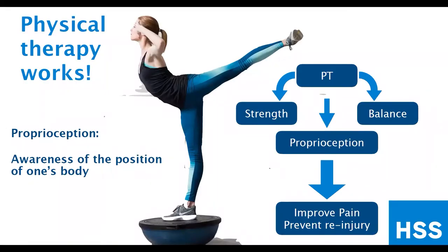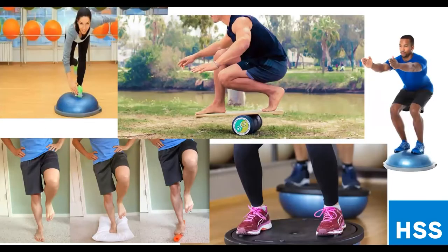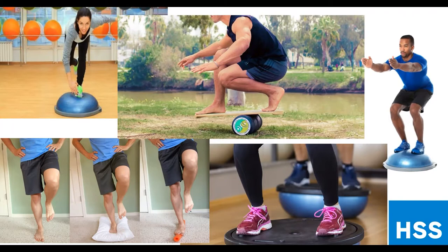Physical therapy works really well for ankle sprains. The basic approach is to increase your strength, balance, and proprioception — which is awareness of the position of one's body, meaning your muscles' ability to sense where they are and help correct imbalances. A lot of the work in PT involves exercises to improve your balance and your muscles' ability to stabilize the ankle. These exercises will improve your pain and help avoid re-injury, training the muscles around the ankle to prevent repeat injuries.